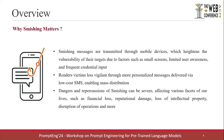So why does smishing matter? Smishing messages are transmitted through mobile devices, which heightens the vulnerability of targets due to factors such as small screens, limited user awareness, and frequent credential input. It also renders victims less vigilant through more personalized messages delivered via low-cost SMS, enabling mass distribution. The dangers and repercussions of smishing can be severe, resulting in financial loss, reputational damage, loss of intellectual property, and disruption of operations. Therefore, it is crucial to provide potential victims with preventive mechanisms that can enhance their resilience to smishing.